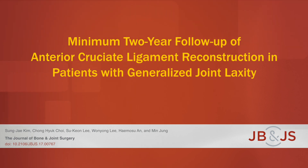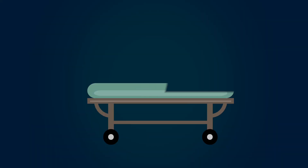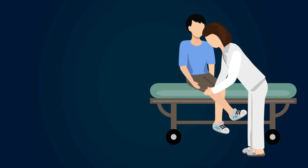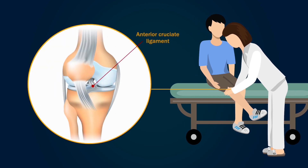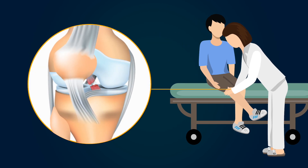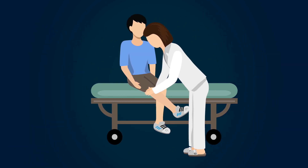This is an audio-visual representation of a study published in the Journal of Bone and Joint Surgery in 2018. There are various reasons for poor outcomes following anterior cruciate ligament, or ACL, reconstructive surgery. Often overlooked is the inherent physiological laxity of the patient's joints.